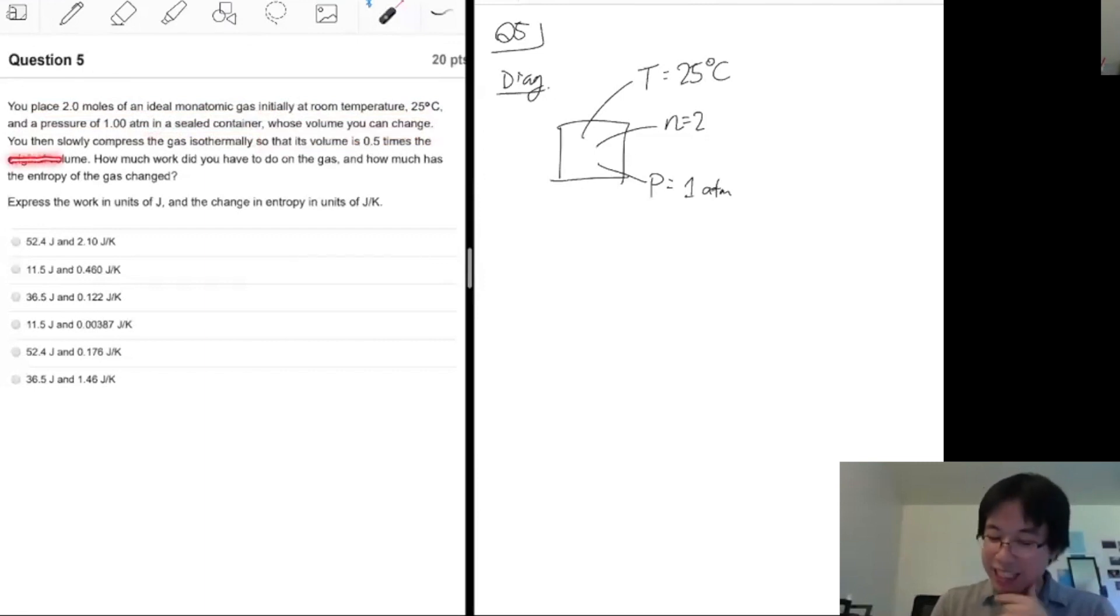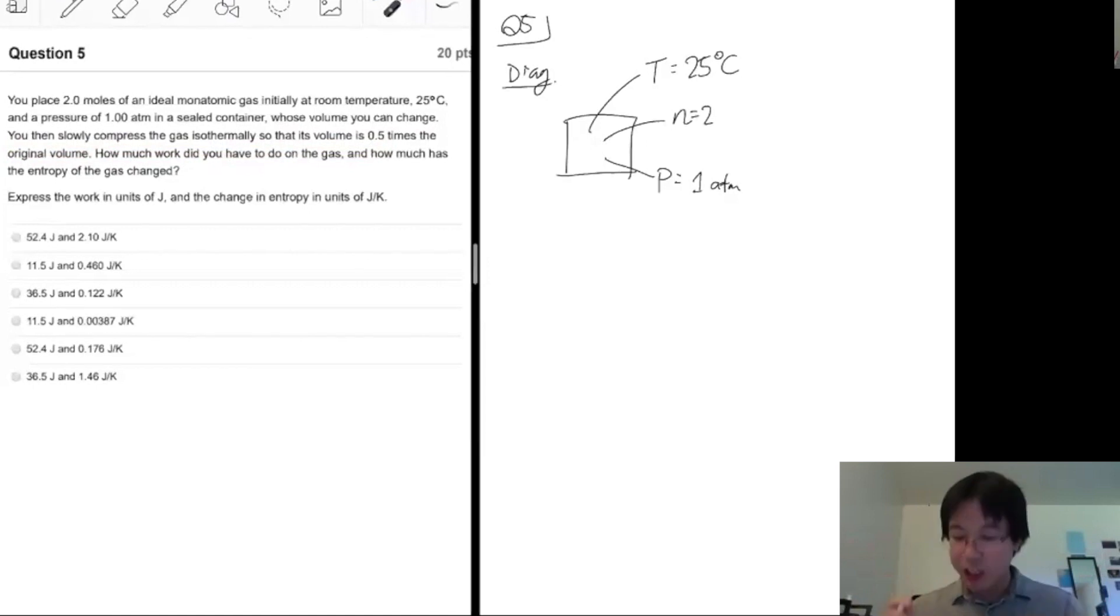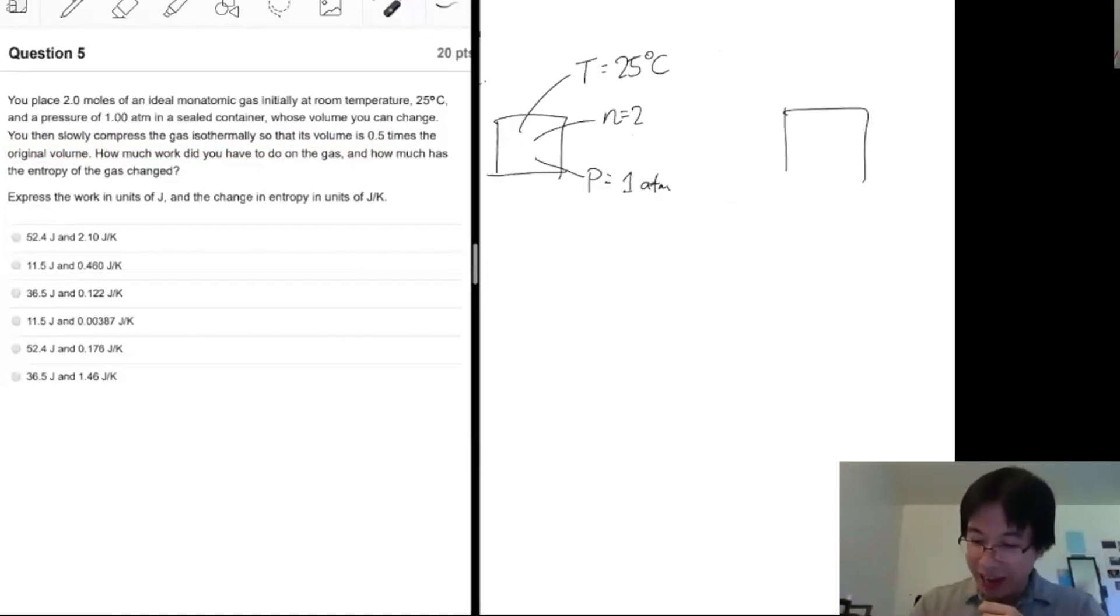You can slowly compress the gas isothermally so that the volume of it. So how do you draw compression? You can't animate things. And if you've seen me solve any of these problems before, the trick is basically draw a before and after. So before and after, so after you have compressed it.